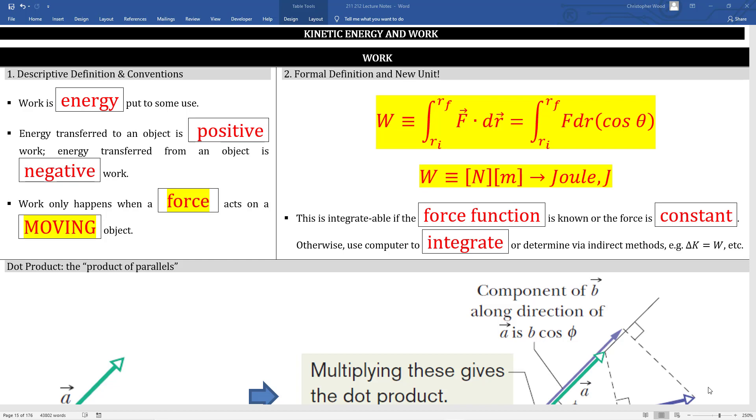Work only happens when a force acts on a moving object. So you could push really hard against a wall, but if that wall doesn't move, you're not doing any work. Box number 2 is the formal definition of work. You've probably learned in the past that work is force times distance. This definition is saying the same thing, but it's saying work is the integral of the dot product between the applied force and the displacement.